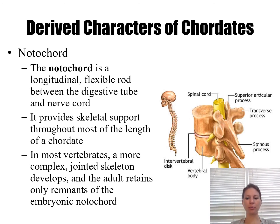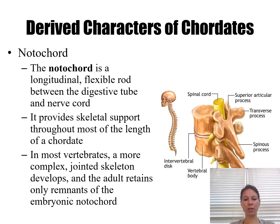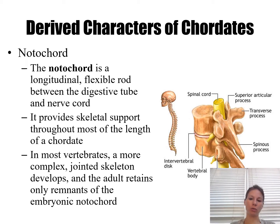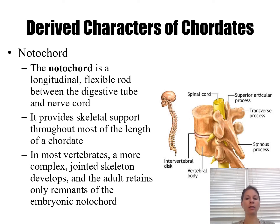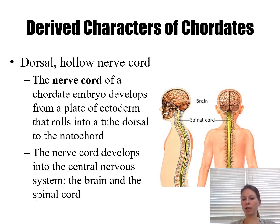The notochord is the predecessor to the vertebral column — you see this in all chordates. You might wonder: do vertebrates have a notochord? They do, during embryologic development. It's a flexible rod that eventually turns into the vertebral column. The thing about derived characters for chordates is that they have these characteristics at some point during their lifetime, but not during all stages. The nerve cord works the same way — they have it during embryologic development.